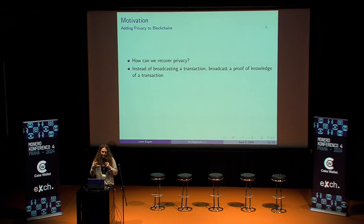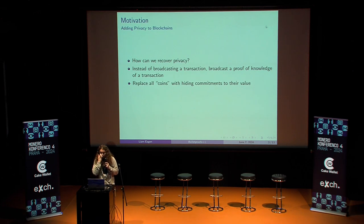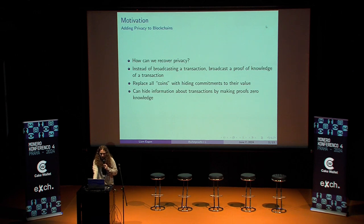So how do we solve this? Basically, there's a simple recipe with a lot of different variations: instead of broadcasting a transaction, we broadcast a proof of knowledge of a transaction — a proof of knowledge as in like a SNARK or a zero-knowledge proof. And if we have a proof system where it's sound and you can only construct proofs for valid transactions, then we can keep data associated with the transaction private. So we replace coins with hiding commitments to their values, and if our proof is zero-knowledge, then the proof reveals no information about the transaction.